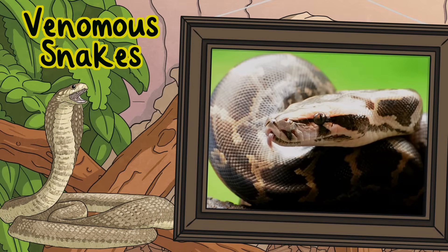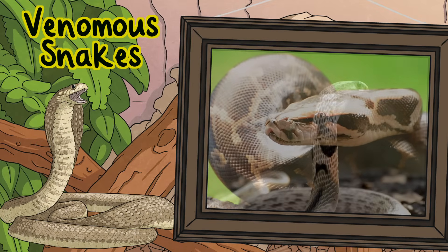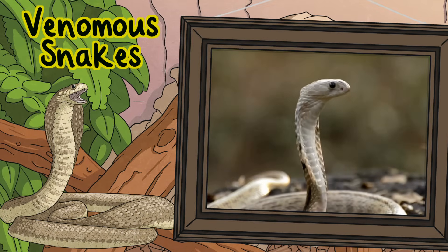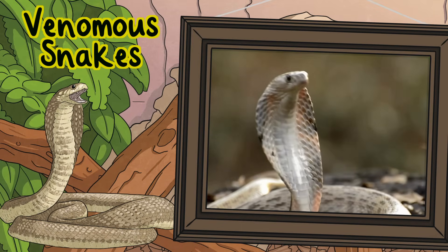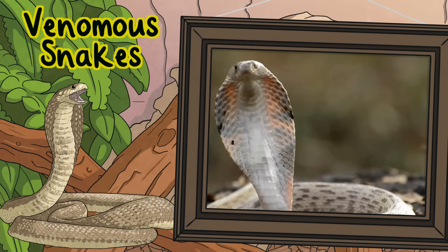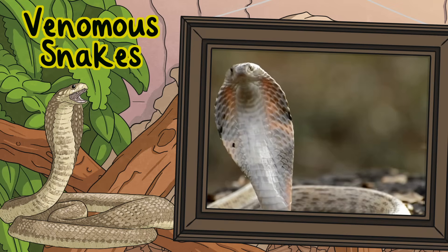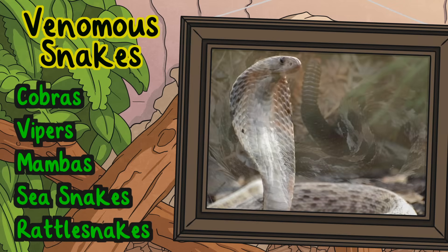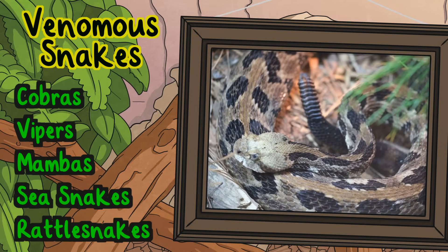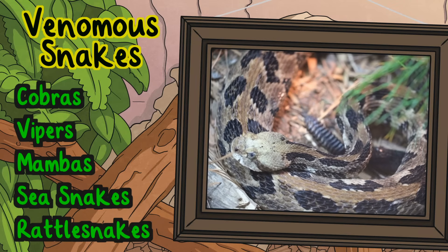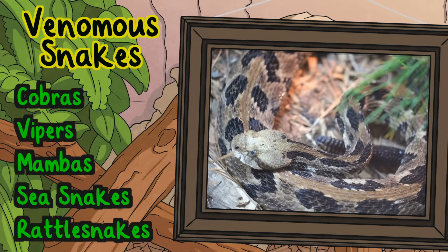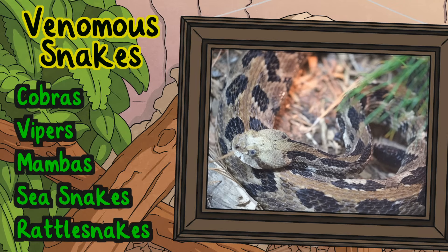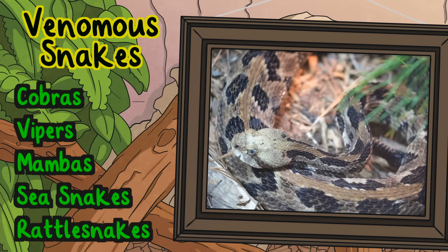Venomous snakes. Some snakes have venom, a toxic substance they use to immobilize prey or defend themselves. These types of snakes include cobras, vipers, mambas, sea snakes and rattlesnakes.